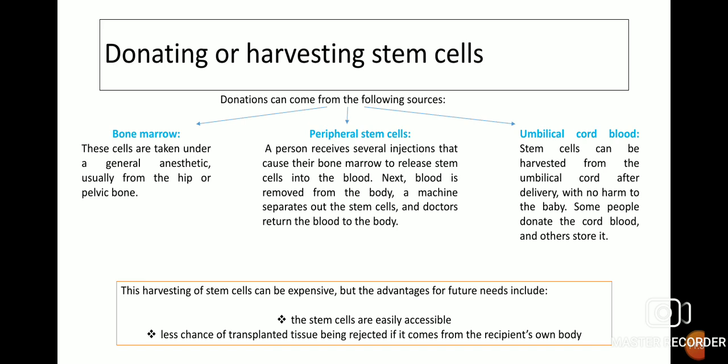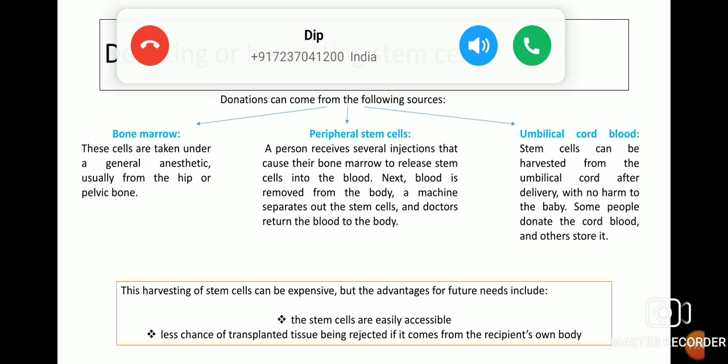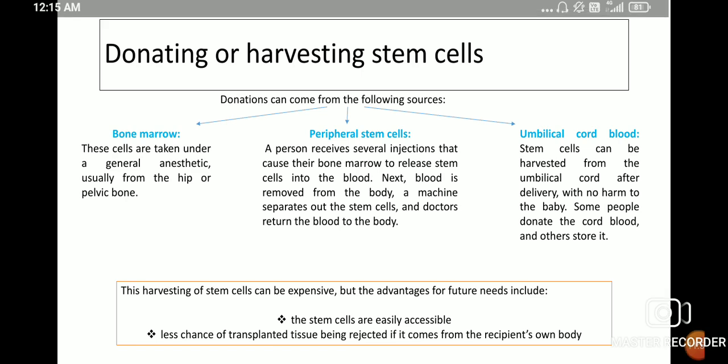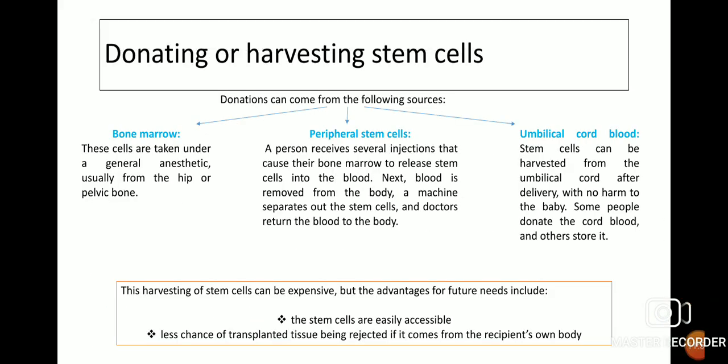Regarding donating or harvesting stem cells, donation can come from three sources: bone marrow, peripheral stem cells, and umbilical cord blood. Bone marrow stem cells are taken under general anesthetic, usually from the hip or pelvic bone. For peripheral stem cells, a person receives several injections that cause their bone marrow to release stem cells into the blood; the blood is then removed from the body and a machine separates out the stem cells.